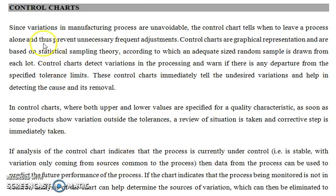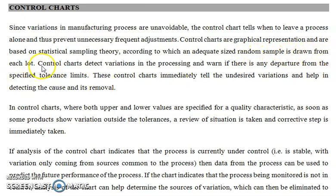First we need to know what a control chart is. Control charts are graphical representations based on statistical sampling theory, according to which an adequate-sized random sample is drawn from each lot. Control charts detect variations in processing and warn if there is any departure from the specified tolerance limit. Suppose we have a lot of 100 items.